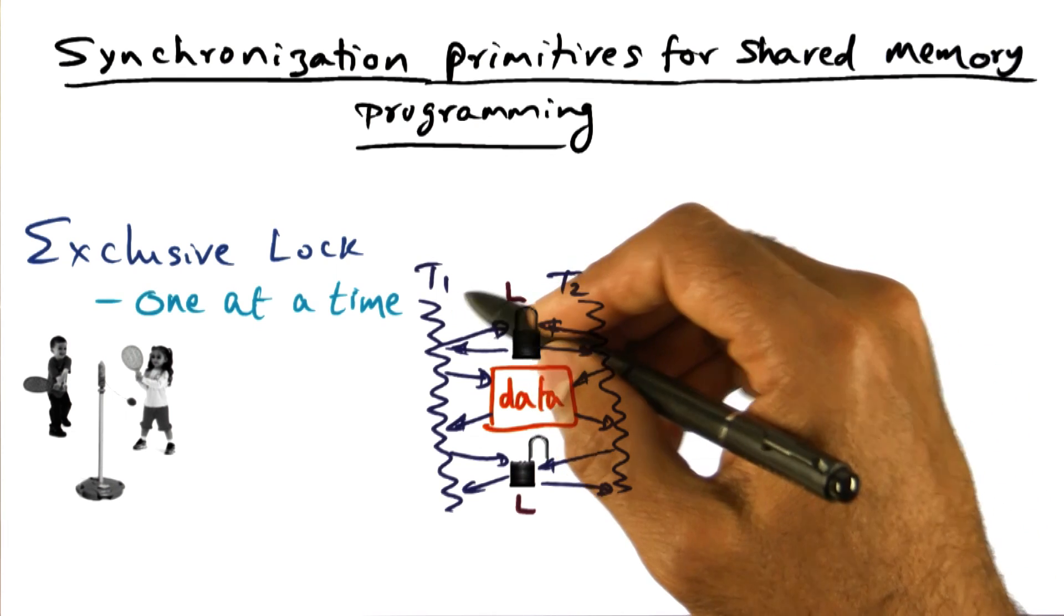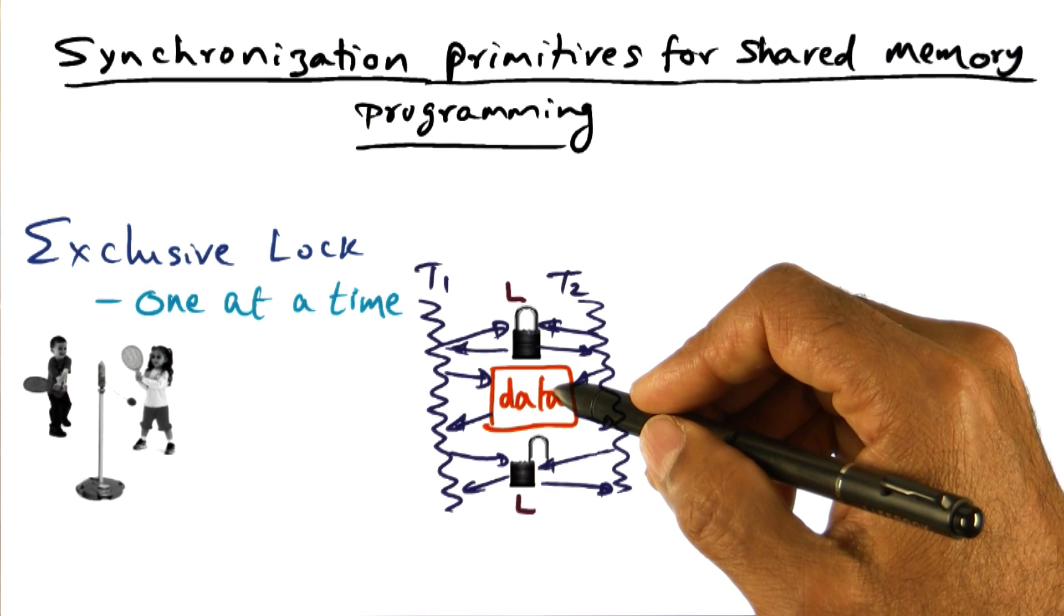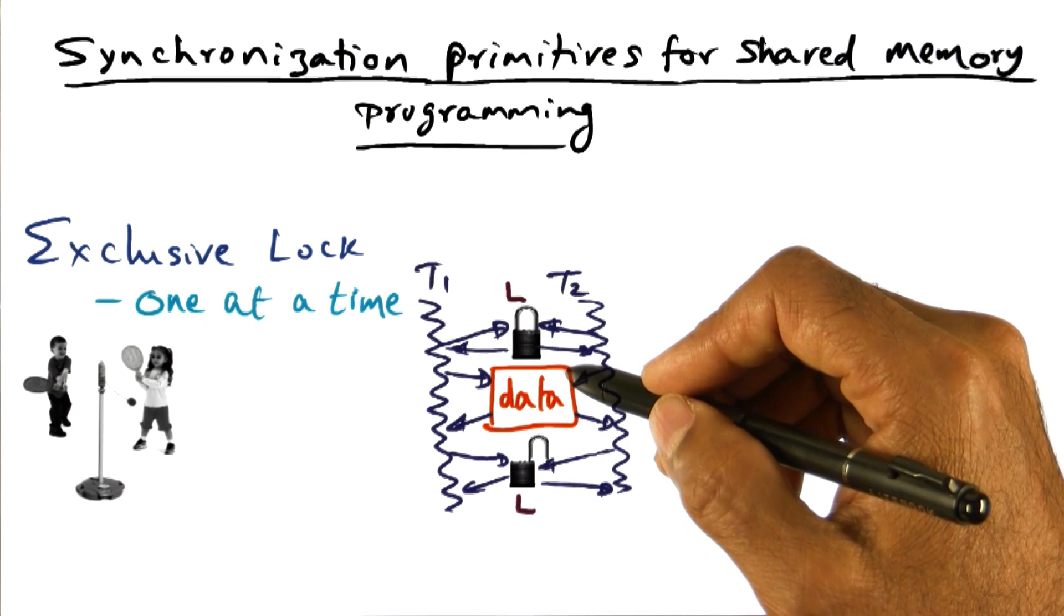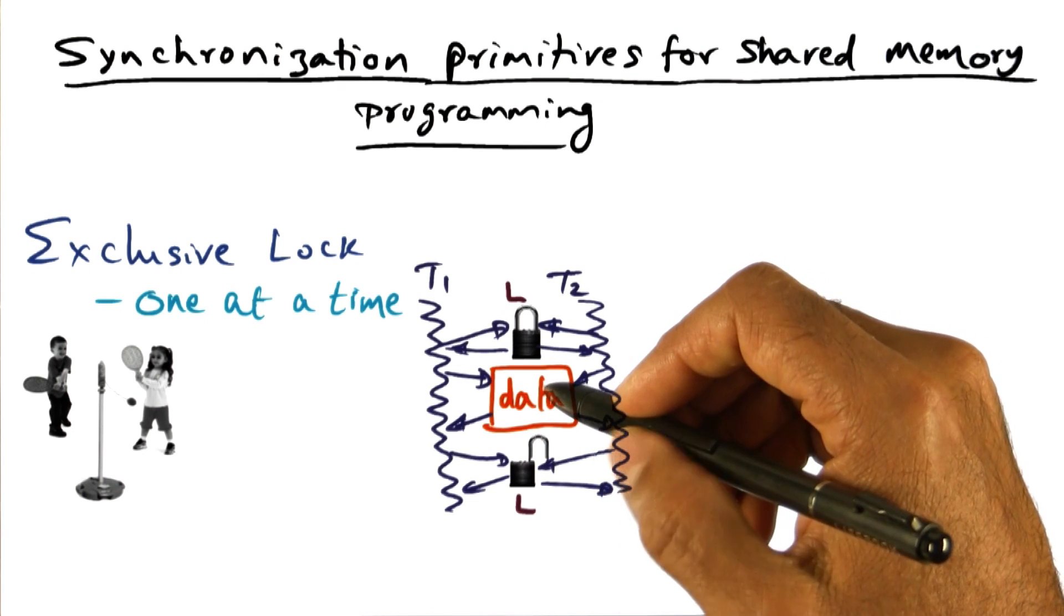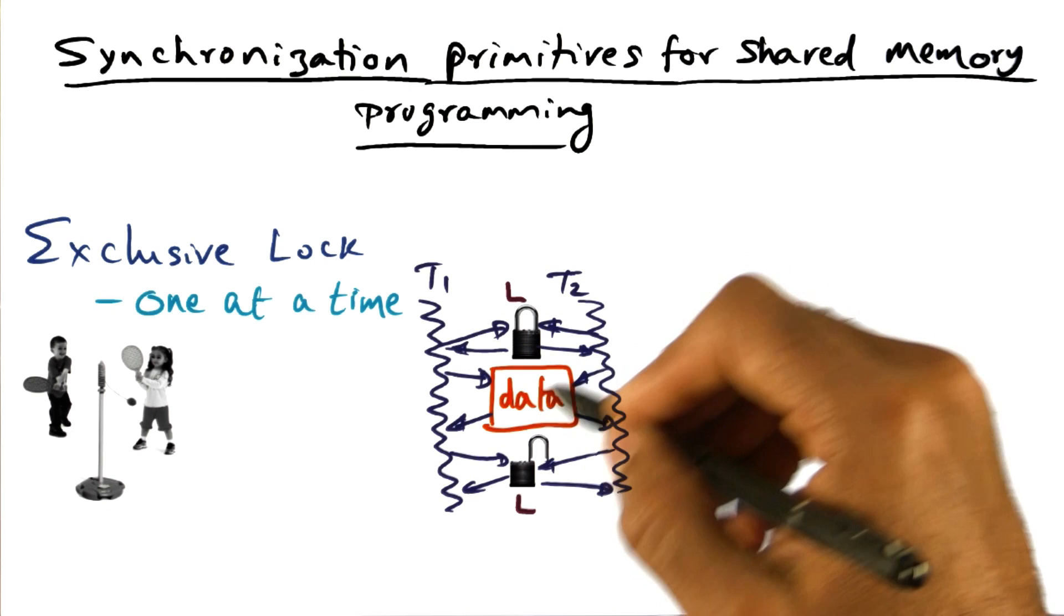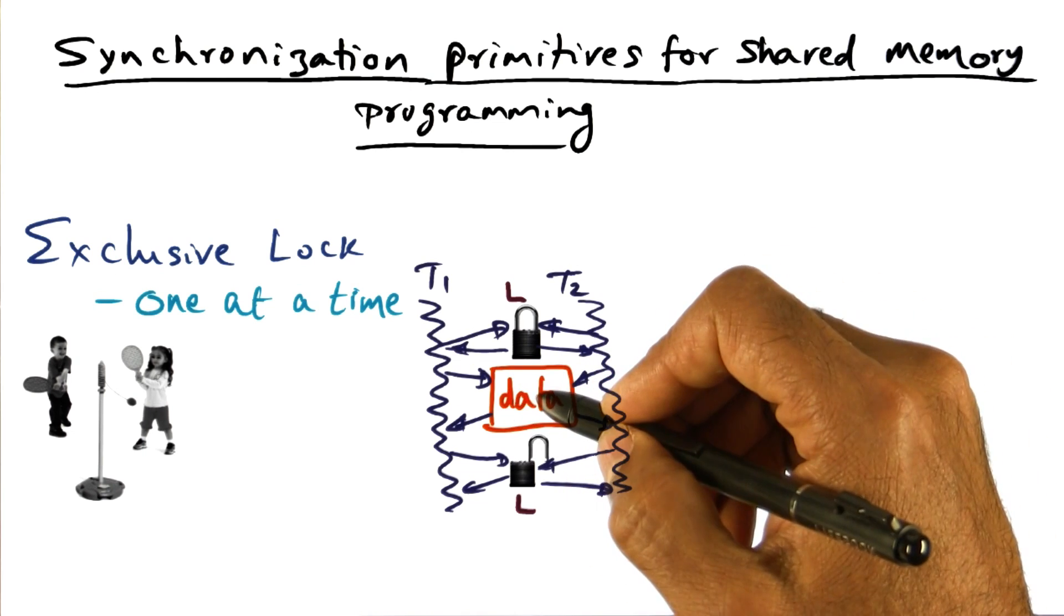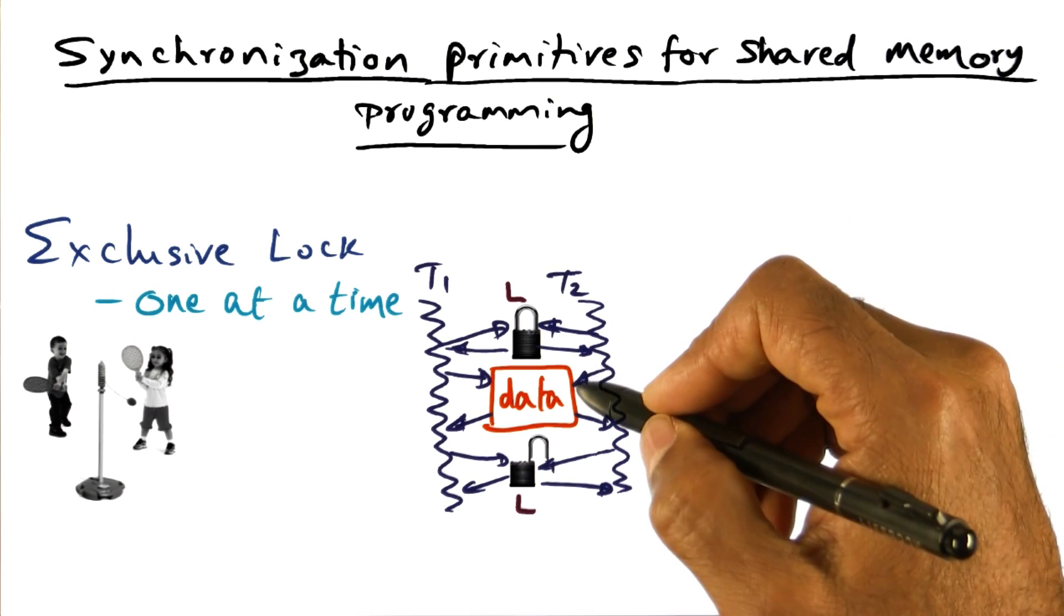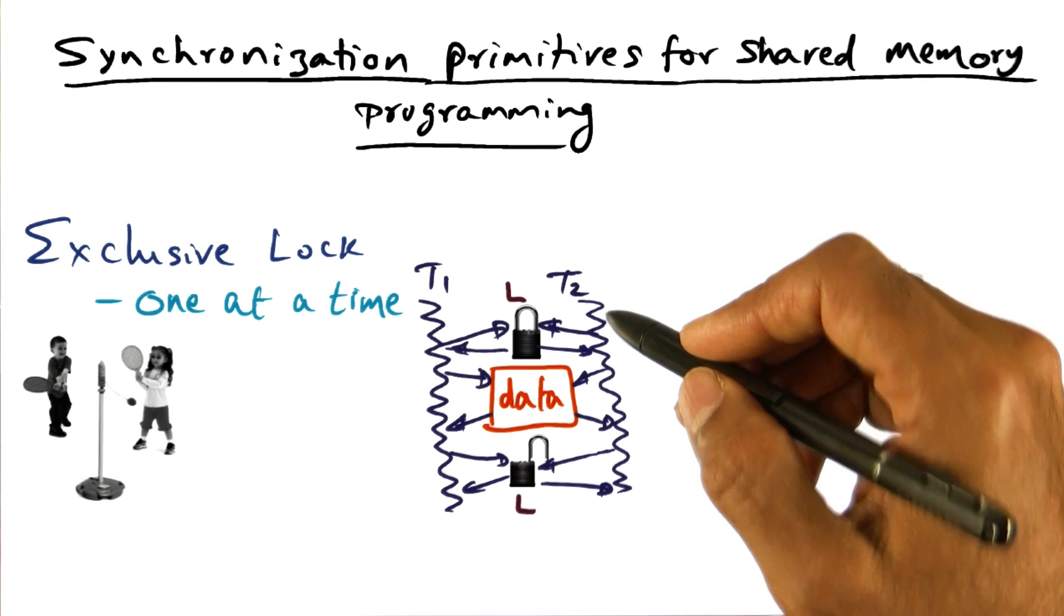The idea is that a thread that wants to modify data, it has to make sure that when it is modifying the data, nobody else is going to be accessing that particular data structure. And therefore, it is going to get a mutual exclusion lock. It knows that nobody else is going to be messing with it. Then it can modify the data and then release the lock.